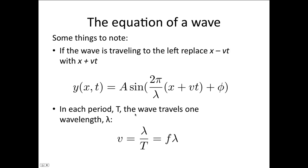Now, each period, the wave travels one wavelength. So the velocity of the wave is equal to the distance over time. Distance is one wavelength. Time is T. So we can write this as fλ. So this equation is a very important equation. v = fλ. The velocity of a wave is equal to the frequency times the wavelength.